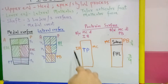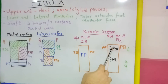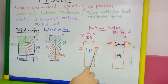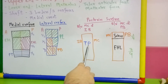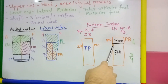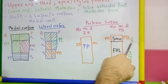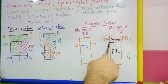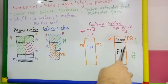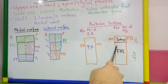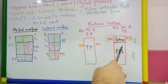Coming to the attachments on the posterior surface of the shaft: the medial crest divides the posterior surface into two parts. The grooved part between the medial crest and the interosseous border gives origin to tibialis posterior. The other part between the medial crest and the posterior border is further divided — the upper one-fourth gives origin to soleus, and the lower three-fourths gives origin to flexor hallucis longus.